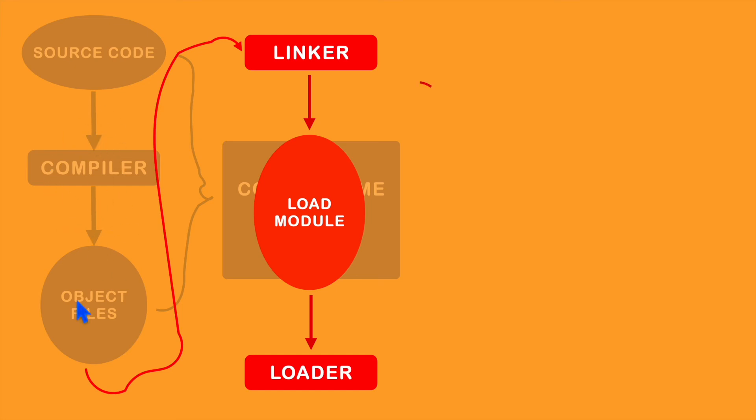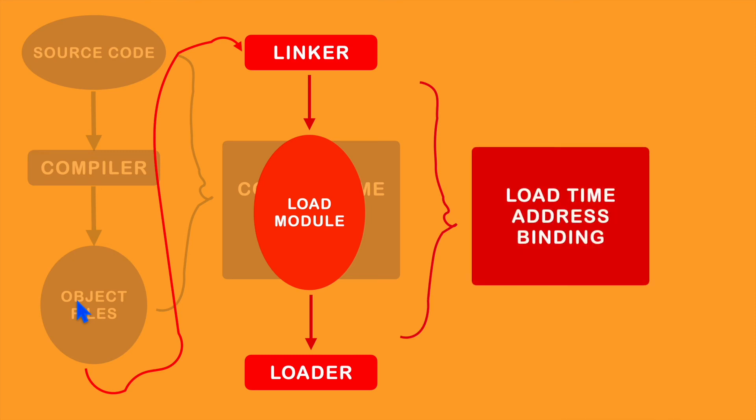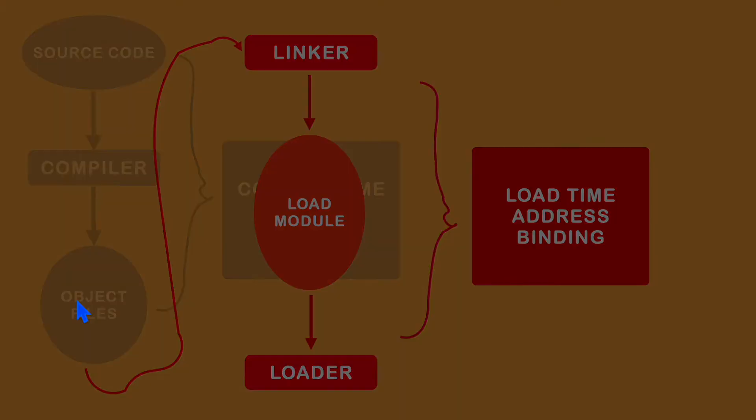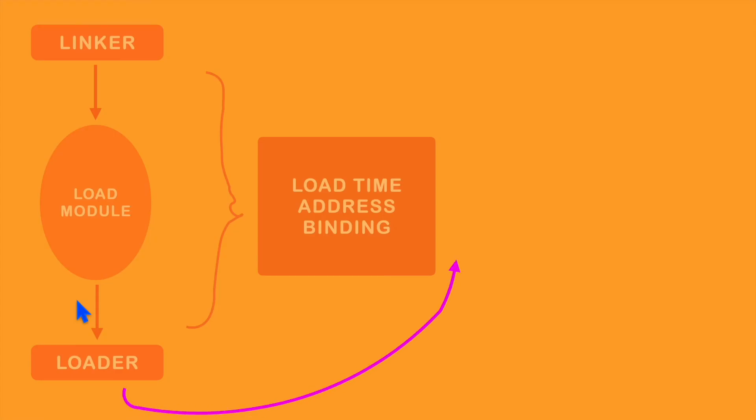And this kind of mapping is known as load-time address binding. Once we load into the main memory, our binary image will start running or executing there.